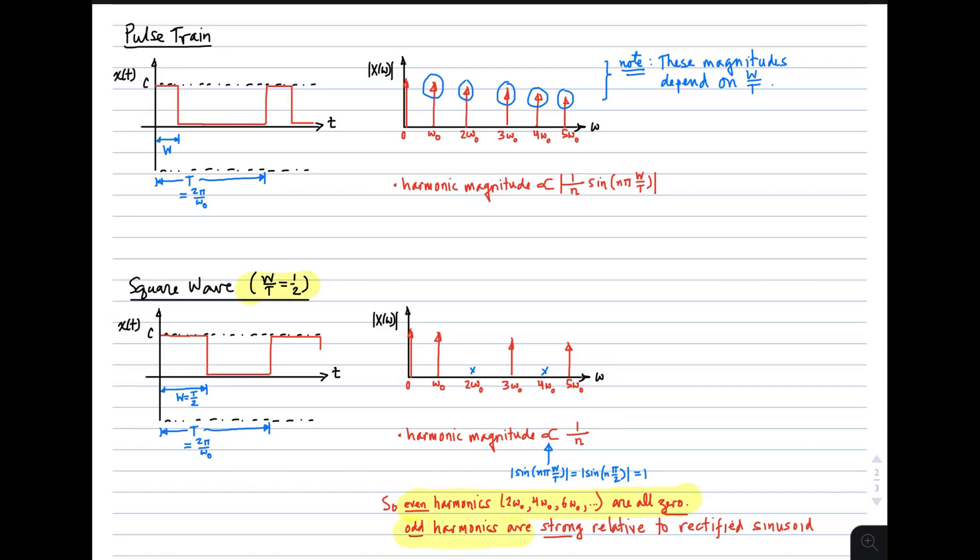Odd harmonics are strong relative to those of a rectified sinusoid. So if you're interested in higher order harmonics, and specifically the odd higher order harmonics, the square wave is what produces those. If you are interested in even harmonics, 2, 4, 6, and so on, rectified sinusoids is probably of more interest. That concludes this lecture on the spectrum of periodic signals.